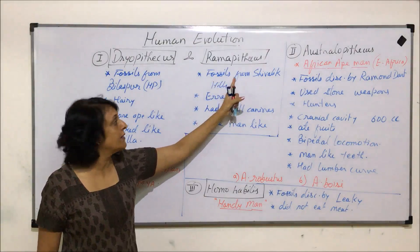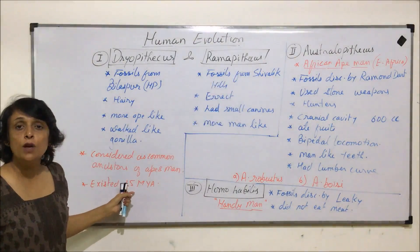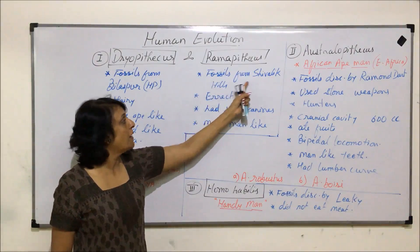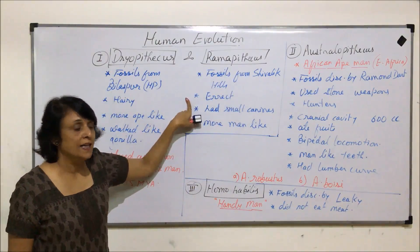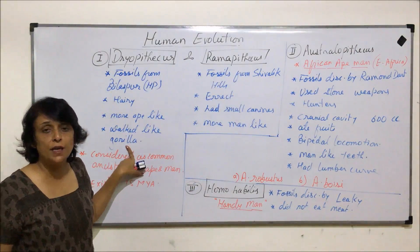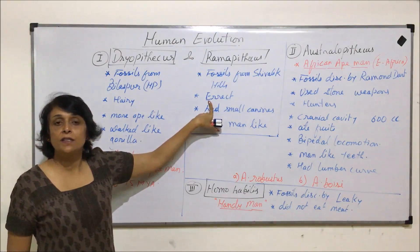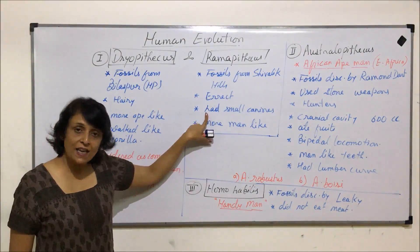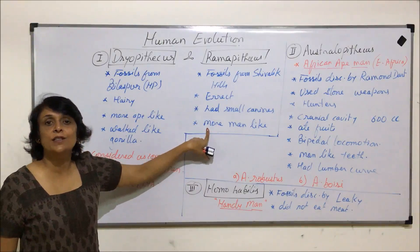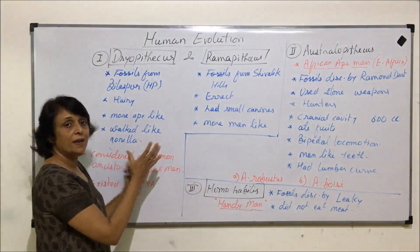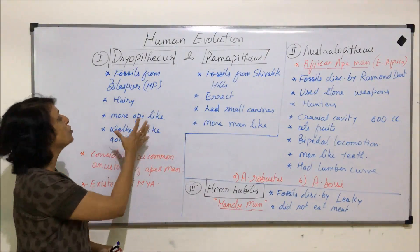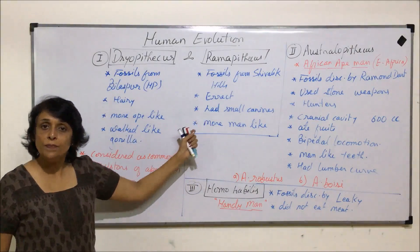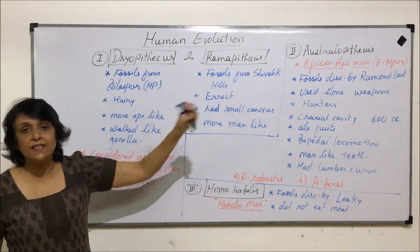Fossils of Ramapithecus were also found from a similar time period, believed to have lived about 15 million years ago. Their fossils were recovered from the Shivalik Hills. They walked erect — more human-like — and had small canines like humans. Both existed at the same time but showed different characteristics, one ape-like and the other human-like.